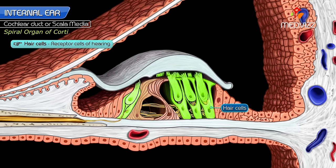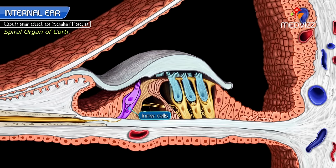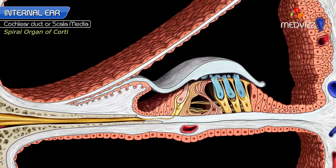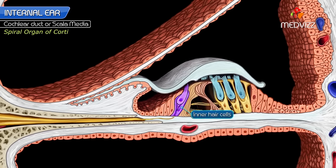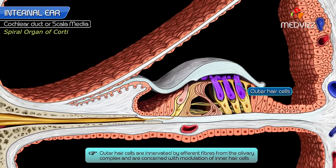Hair cells are receptor cells of hearing located on the basilar membrane. Their apices possess stereocilia, which are overlaid by the tectorial membrane. The inner cells are flask-shaped and arranged in a single row, while the outer cells are cylindrical and arranged in three or four rows. When sound vibrations pass from the perilymph of the scala vestibuli to that of the scala tympani, the basilar membrane bulges and the overlying hair cells are stimulated. The inner hair cells are richly innervated by cochlear nerve fibers and are responsible for transmission of auditory impulses. The outer hair cells are innervated by efferent fibers from the olivary complex and are concerned with modulation of inner hair cells.